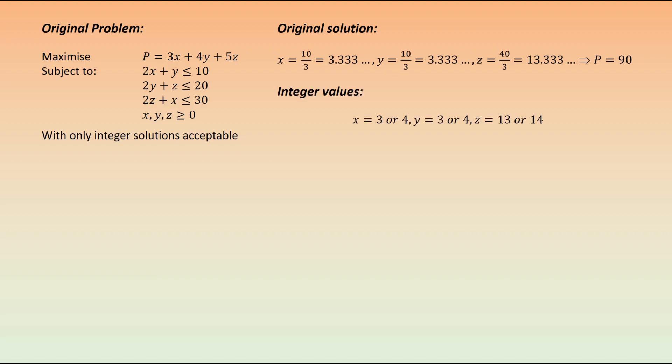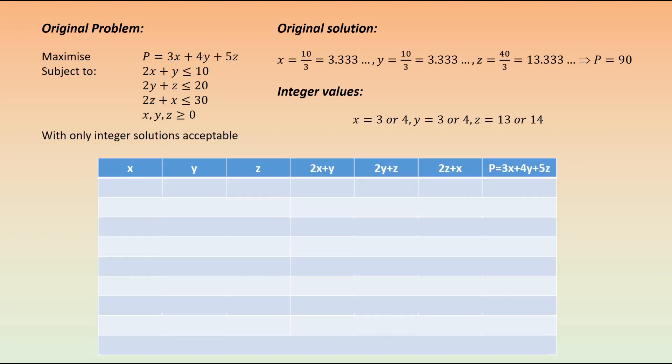There are a variety of different ways we can combine those numbers, so we would first of all check with each of the lower values: x being 3, y is 3, and z is 13. We can work through our constraints: 2x plus y is 9, 2y plus z is 19, and 2z plus x is 29. This would give us a value for our objective function of 86.